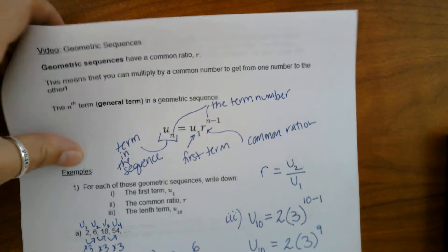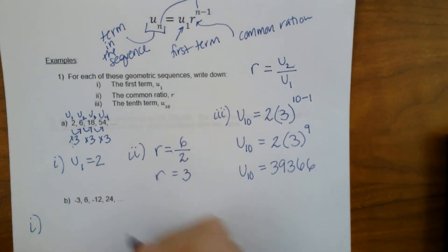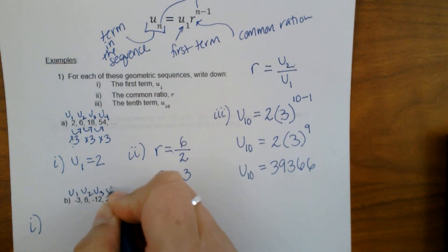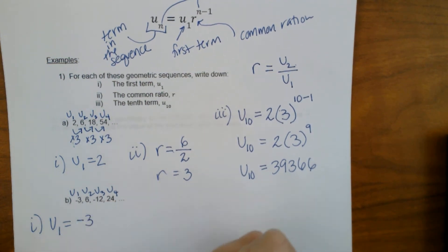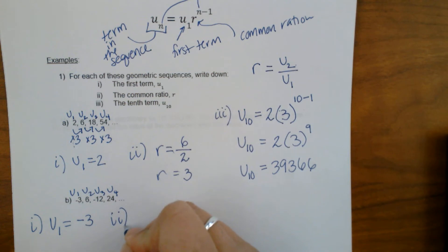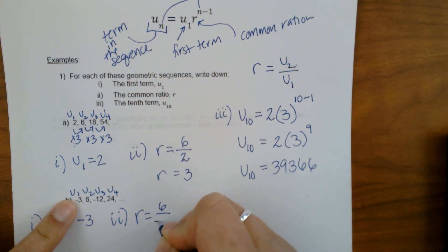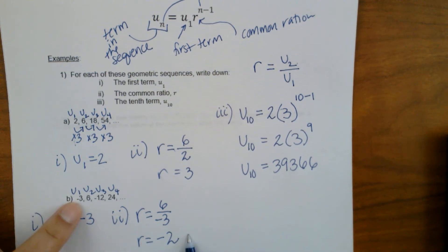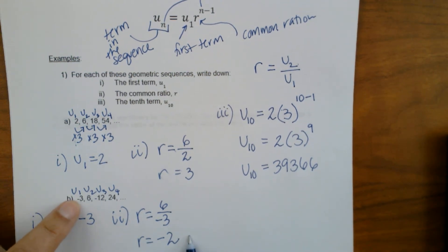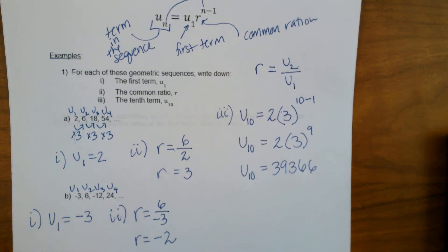Now let's do part B, the second sequence. u sub 1 equals negative 3 — be careful, that is a negative. For the common ratio, take the second term, 6, divided by the first, negative 3. Our common ratio is negative 2. This makes sense because the sequence goes negative 3, positive 6, negative 12, positive 24 — it switches back and forth between positive and negative.